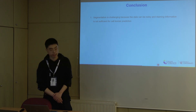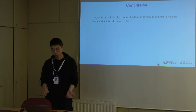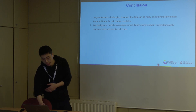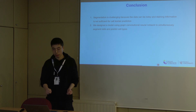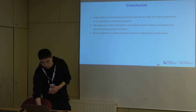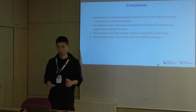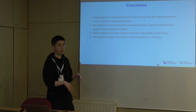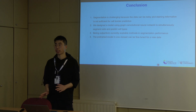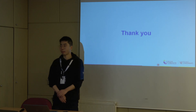To wrap up: segmentation is currently still a very challenging problem, and using staining or imaging information alone is not sufficient for border detection. We designed a graph convolutional neural network to simultaneously perform segmentation and predict cell labels, and it outperforms other available methods. We can also transfer our models with fine-tuned parameters to new datasets, learning from existing data to adapt our models to other technologies as well. Thank you, and I'm happy to take any questions.